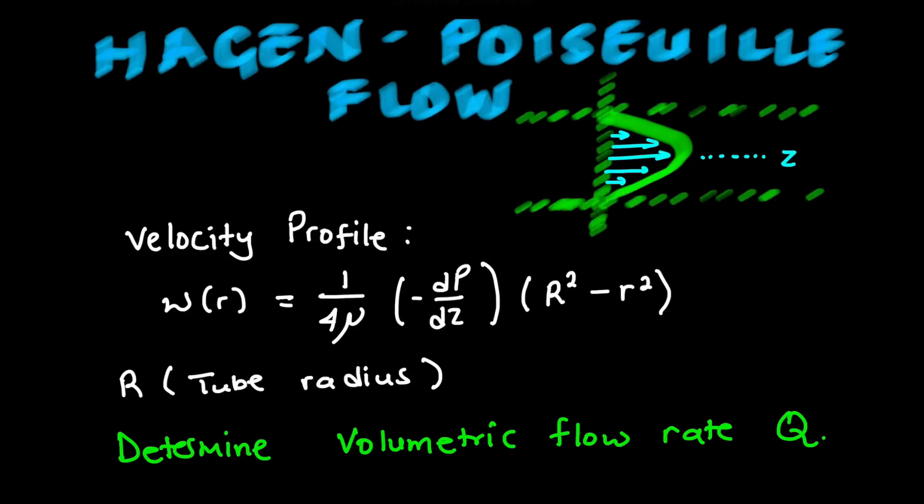Hello everyone, welcome to Academy Coordinates. In this video, I will be determining the volumetric flow rate, which is denoted as Q, and we are dealing with a Hagen-Poiseuille flow.